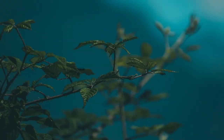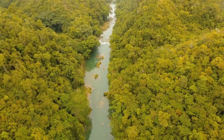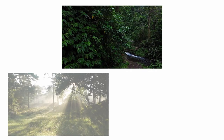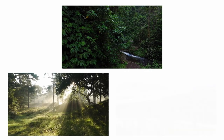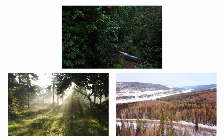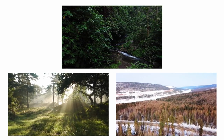These can be further divided based on specific factors such as temperature, precipitation, and plant types. For example, forests can be classified into tropical rainforests, temperate deciduous forests, or boreal forests, also known as taiga, depending on where they're found on Earth.